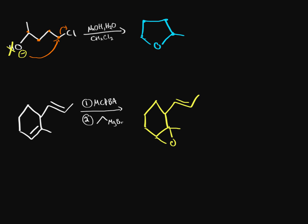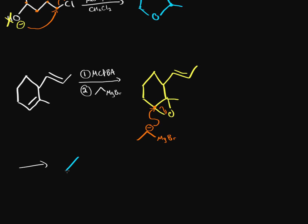With the Grignard reagent — a two-carbon chain connected to MgBr — magnesium has a positive charge and the carbon has a negative charge, so it acts as a strong nucleophile, just like in the previous base-catalyzed reaction. It attacks the least hindered carbon, this bond breaks and goes to the oxygen, giving an anti-addition. The Grignard attacks from the opposite side of where the oxygen will end up. If the Grignard goes down, the oxygen goes up and after protonation becomes an OH group. The methyl group is opposite to the oxygen, and the remaining double bond side group just sits unreacted.